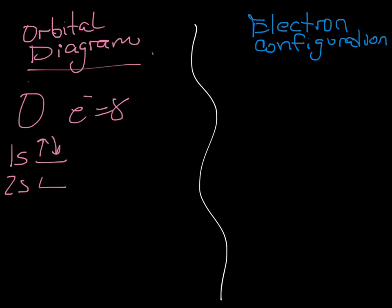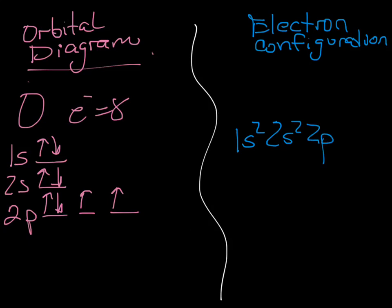So, one S with two electrons, two S with two electrons, and two P, three orbitals. We need four more electrons. So one, two, three, and four. So the orbital diagram for oxygen looks like that. The electron configuration would then be one S two, two S two, and two P four.